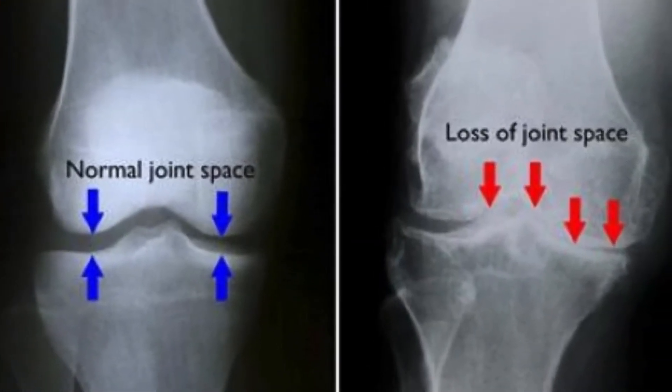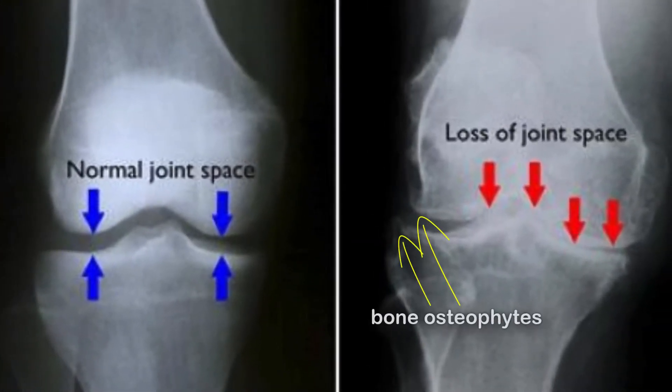Diagnosis of osteoarthritis of the knee is achieved usually with a typical medical history and confirmed by an x-ray of the knee joint. Some of the classical features you see on x-ray include reduced joint space, irregularity of the bone which we commonly call spikes or osteophytes, and knee joint deformities.